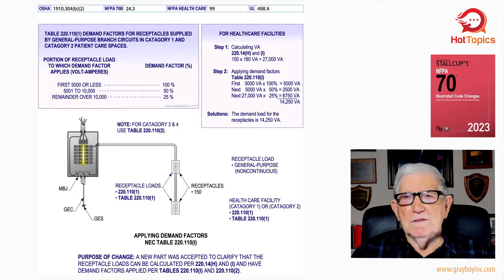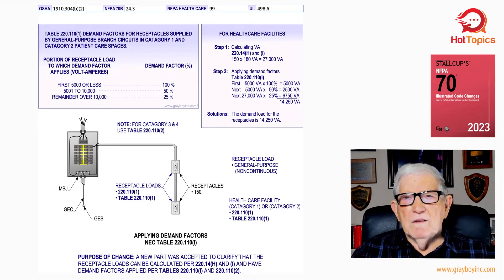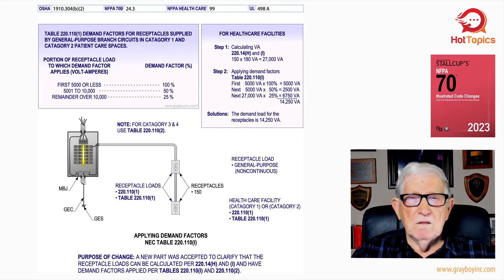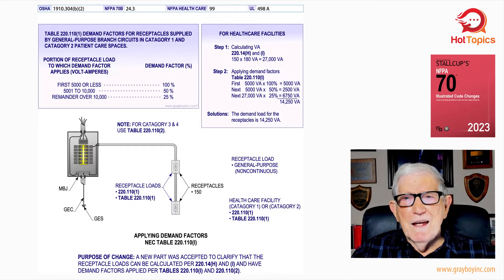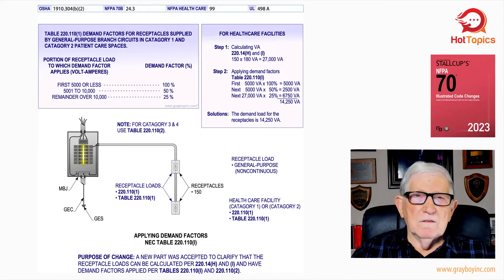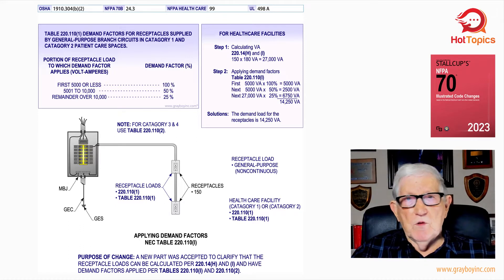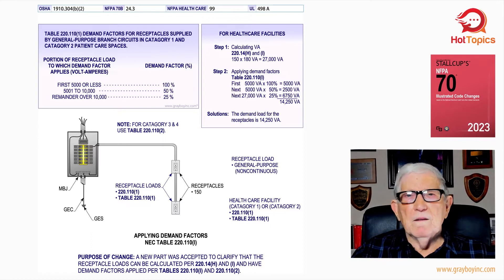For example, look at the calculation here. Per 220.14H and I, 150 receptacles at 180 VA would come up to 27,000 VA — that's step one. Step two, applying the demand factors of table 220.110.1: first 5,000 at 100% — so 5,000 right across the board. The next 5,000 at 50%, we'd come up with 2,500. Then anything over 5,000 up to 10,000 — and our total is 27,000 — we'd take 25%. Our demands would be: 100% no demand, 50% demand, 25% demand, and when you total those values, we come up with 14,250.